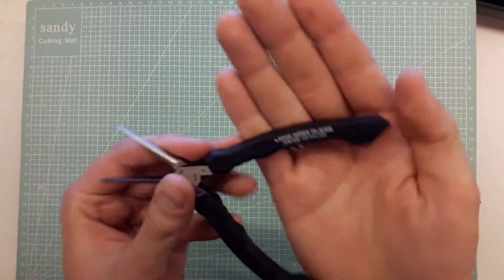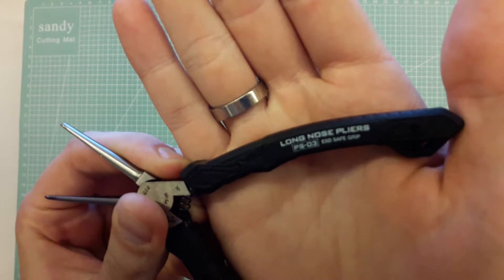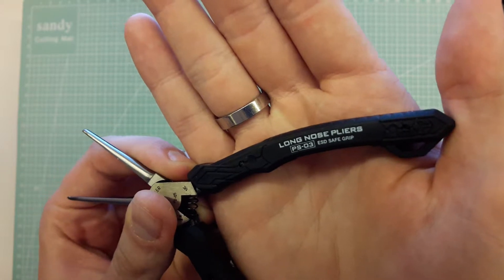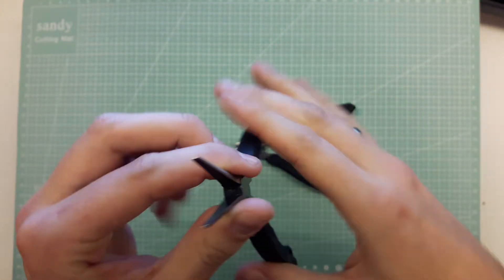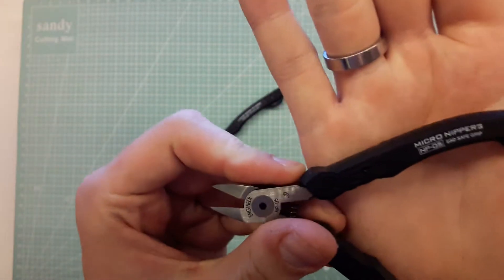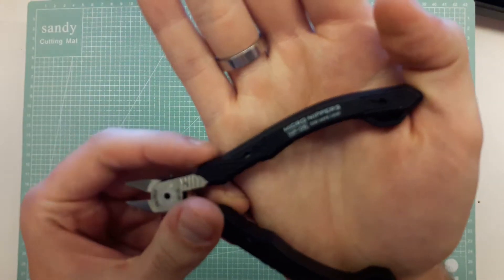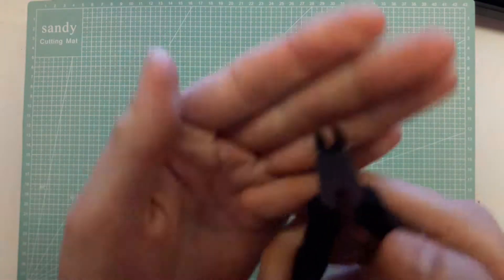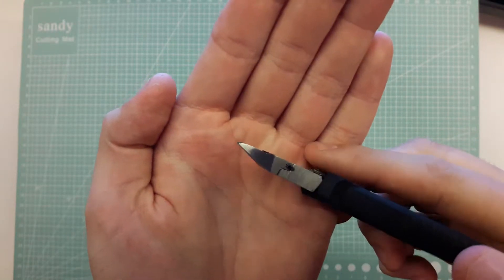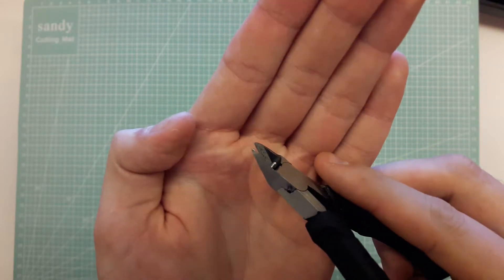So these are the PS03 ESD safe grip long nose pliers. It's a rubber grip, all metal inside. And these are the NP05 ESD safe micro nippers - snippers, nippers, close cutters, whatever you want to call them - with a flat bottom so you can cut close to circuit boards and such.